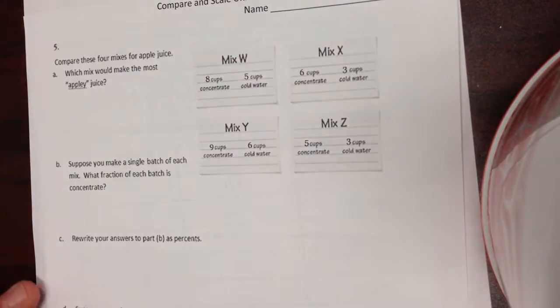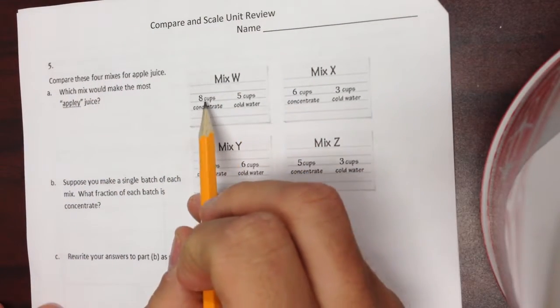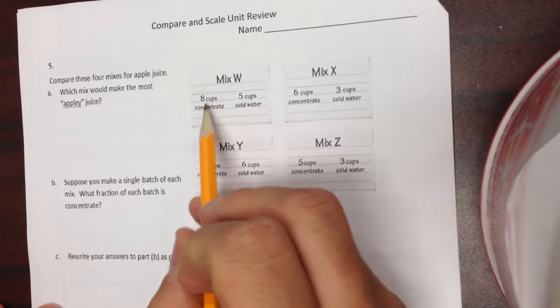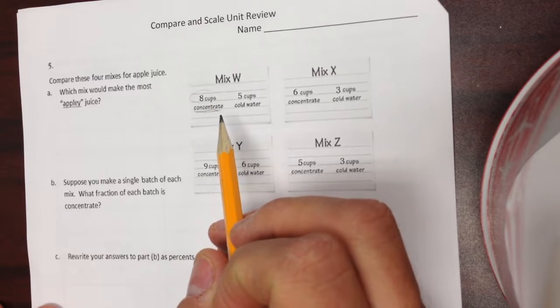Page two. Okay, we're doing here, we're doing which one is the juiciest. And to find out which one has the highest amount of concentrate, probably the easiest way to look at that is a percent, because it's right there easy.